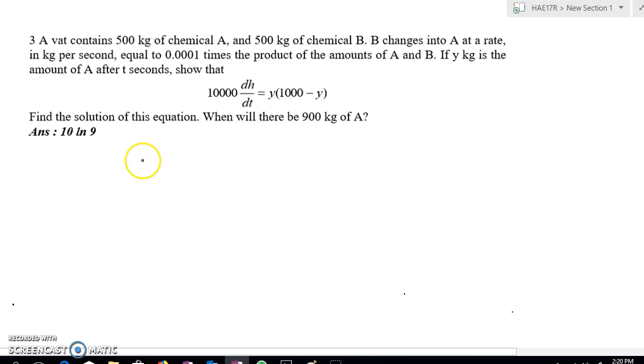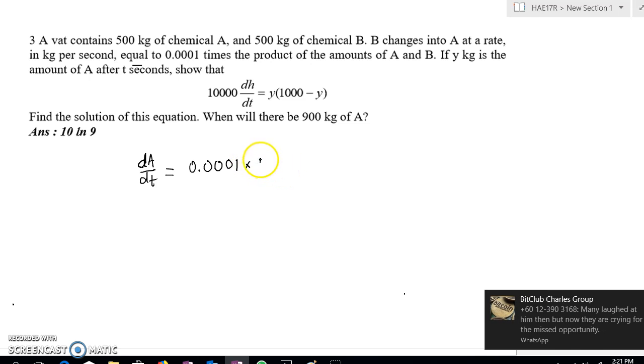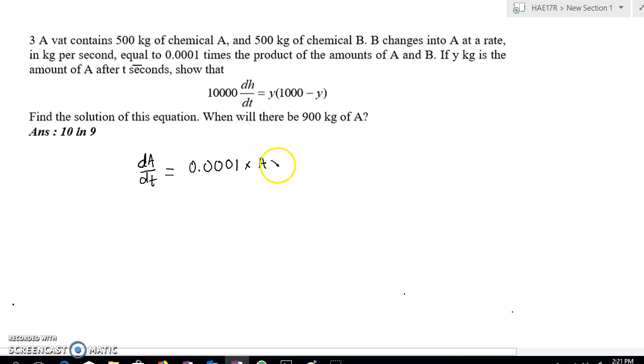dA/dt equals to 0.0001 times the product of A and the product of B, right?